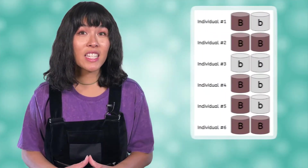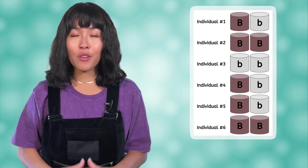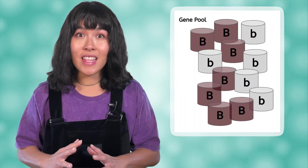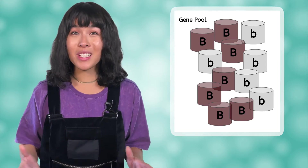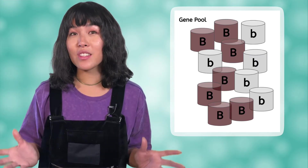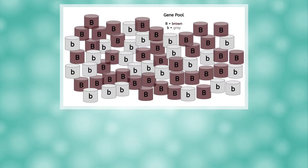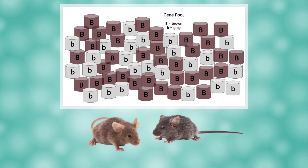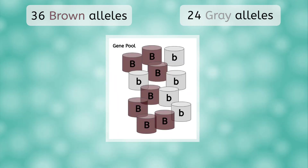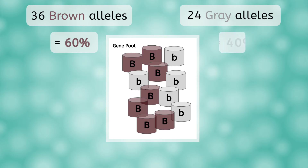Remember from our genetics unit that all individuals have two alleles for each gene. If we were to imagine all of those alleles from every single individual in the whole population put into one big pile, that would represent the gene pool. Scientists use the concept of the gene pool to measure the overall genetics of a population. We'll assume that this gene pool shows all of the alleles for fur color in a population of mice, where brown is dominant and gray is recessive. From the gene pool, we could count how many of the alleles were for each color. There are 36 total alleles for brown and 24 total alleles for gray. We use these numbers to get the allele frequencies: 60% of the alleles in the population are for brown color and 40% are for gray color.